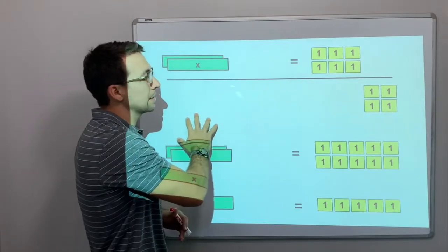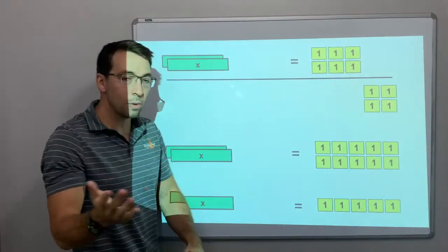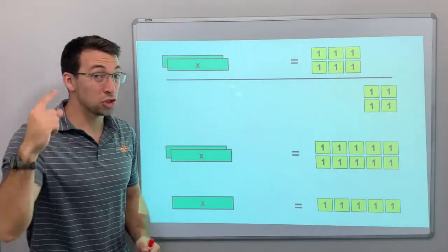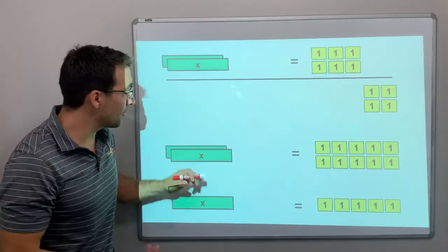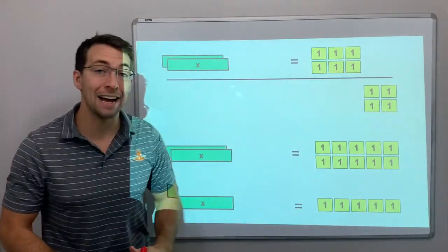We have 2x equals 10. Well, 2 is divisible by 2, and 10 is divisible by 2. So let's divide both by 2. Oh, 1x equals 5.